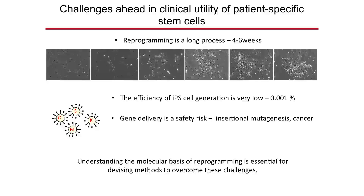Why are we not seeing these personalized stem cells used in clinical care more often? There are a number of challenges. First, it takes a long time — about four to six weeks — to make a personalized stem cell from a skin cell, which may be too slow for acute conditions. Second, the efficiency of conversion is low: starting with about 100,000 skin cells, you get only about one to ten stem cells.